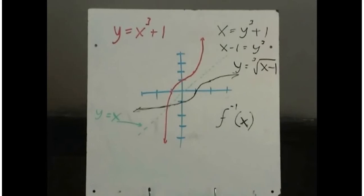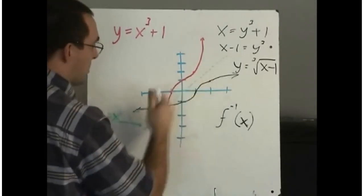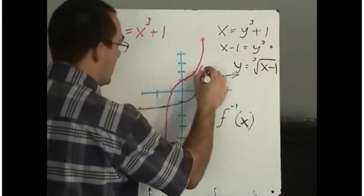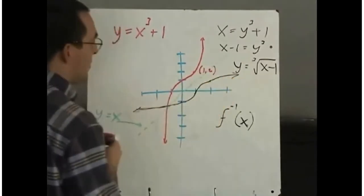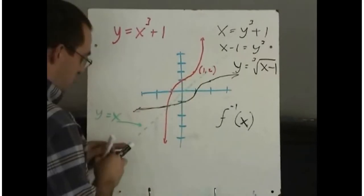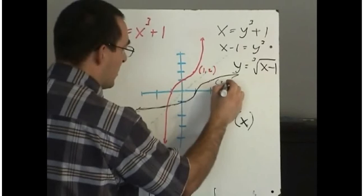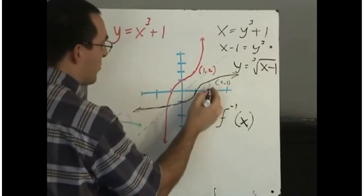So if we look at this red one, this coordinate here is the coordinate 1, 2. That's what this point would be, point 1, 2. x is 1, y is 2. Well look at what point you get on the inverse. This one right here, which is the point 2, 1, right 2 and up 1.